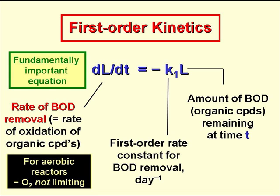This equation, which is valid for aerobic reactors in which oxygen is not limiting, basically says that the rate of BOD removal, dL/dt, at time t, is proportional to the amount of BOD, L, still to be removed at that time.